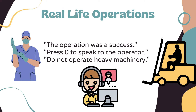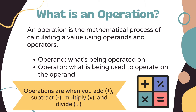But what does operations mean in mathematics? In math, an operation is the mathematical process of calculating a value using operands and operators. An operand is what's being operated on, and an operator is what is being used to operate on the operand.